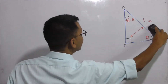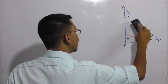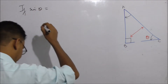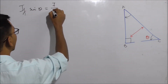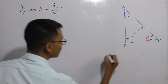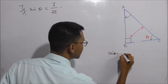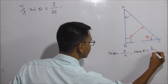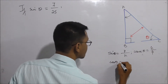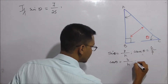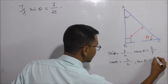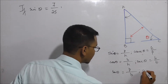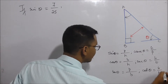So the six trigonometric ratios are: sine theta equals perpendicular by hypotenuse, cosec theta equals hypotenuse by perpendicular, cos theta equals base by hypotenuse, sec theta equals hypotenuse by base, tan theta equals perpendicular by base, and cot theta equals base by perpendicular.